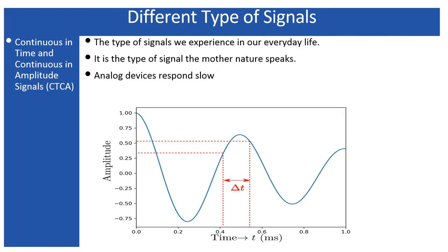Let's start with the first signal type: Continuous in Time and Continuous in Amplitude, or CTCA. This is the technical name for a pure analog signal — the signal our mother nature speaks with. Everything around us is analog in nature. When you speak to your family, parents, or friends, or listen to them, you are all communicating with analog signals.